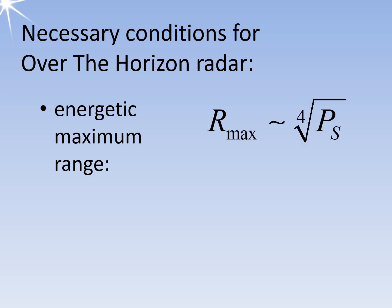The relationship between transmission power and maximum range was previously explained in the video about the radar basic equation. This high transmission power often leads to the use of bistatic radars for over-the-horizon applications, where the receiving antenna is separated from the transmitting antenna, making it easier to protect the sensitive receivers from the high transmission power.